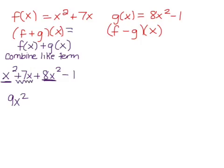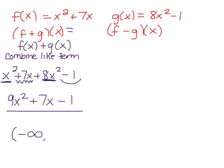7x doesn't have a like term; there are no other terms that have an x attached. And then we have the constant minus 1. Here is our result of f plus g. Since this is a polynomial, our domain is negative infinity to positive infinity.